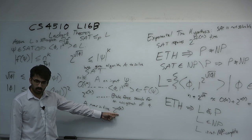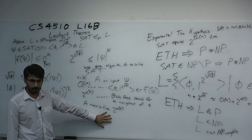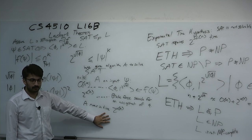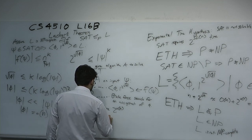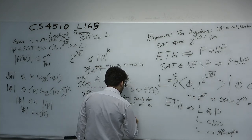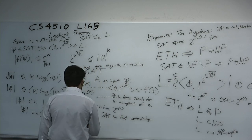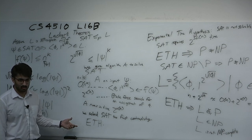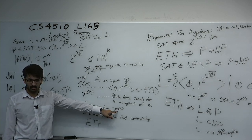If A runs in time 2^(o(n)), we've solved SAT too fast, contradicting our assumption of the Exponential Time Hypothesis. You can perhaps see how this analysis would get harder had we not assumed SAT took exponential time — this would not be satisfactory to conclude a contradiction, and there would be many more messy details.